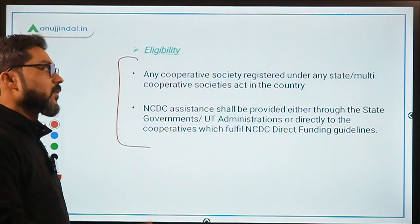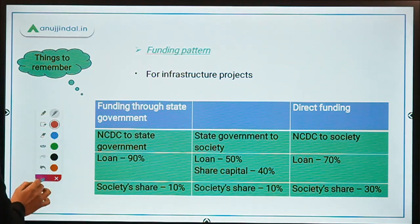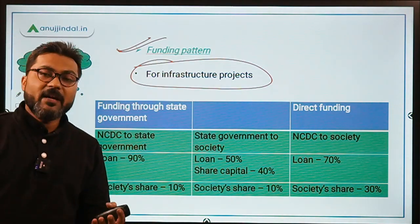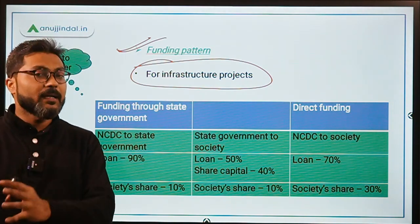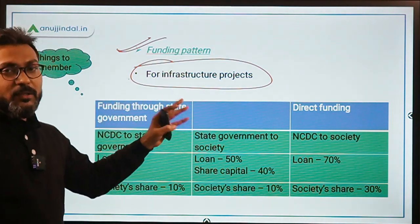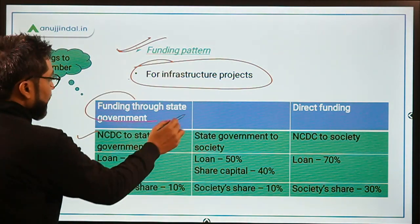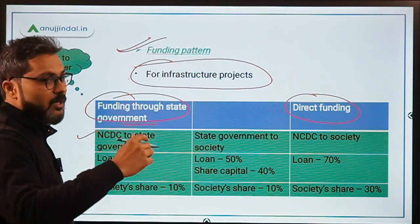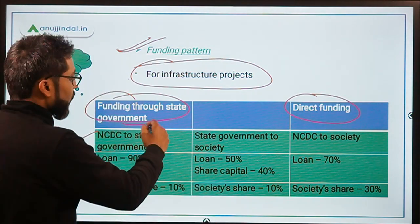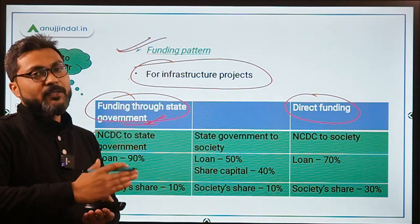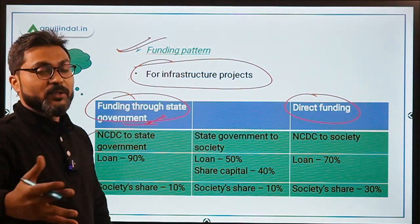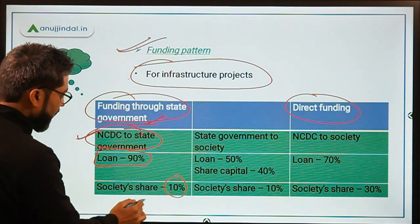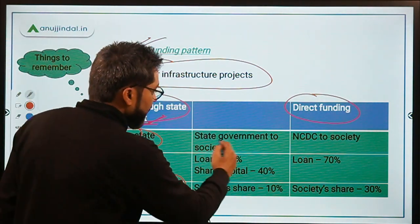Now let's talk about the funding pattern. There are three types of activities: infrastructure projects, margin money, and working capital. For infrastructure projects, there are two modes of funding — through state government and direct funding. When NCDC funds through the state government, 90% is loan and 10% is the society's share. When the state government provides to the society, 50% is loan and 50% is deposit or share capital.